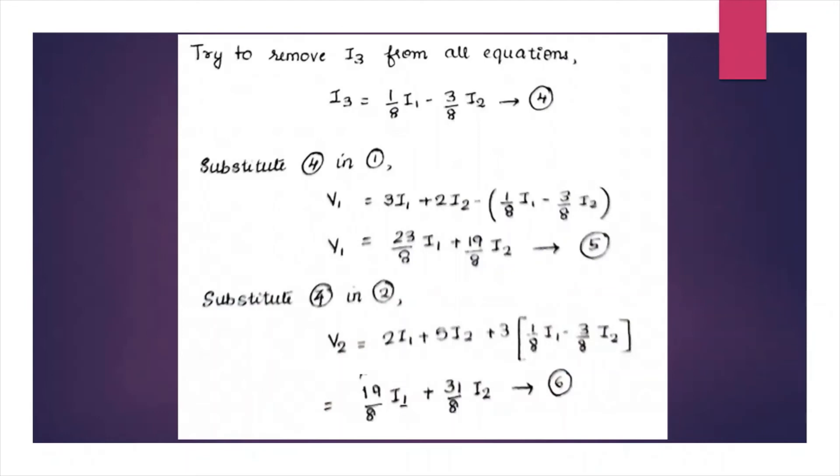Now substitute I3 in equation 1 and then remove I3 from equations 1 and 2. So we get equations 5 and 6. Now it's in terms of I1, I2, V1, and V2.